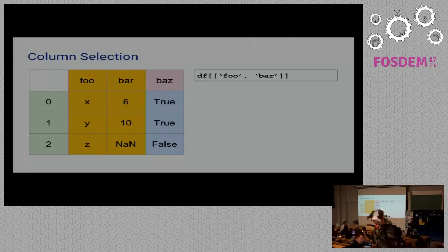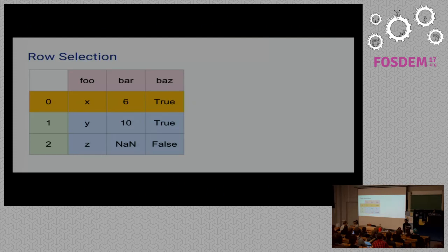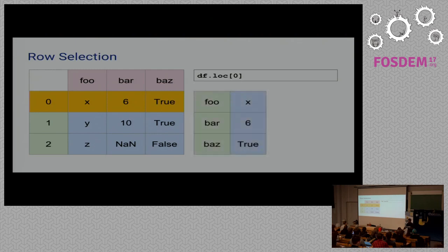Any guesses what structure will be there? Exactly, easy right, so easy. If you want to fetch a row, you can simply pass the index of the row. We just pass the index of the row to the location which is LOC, and it will give you another series.